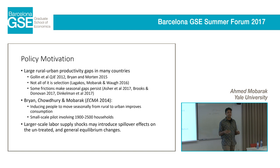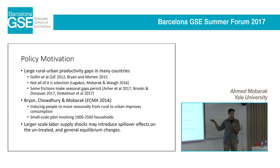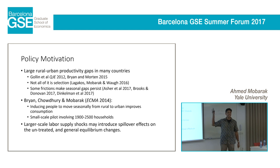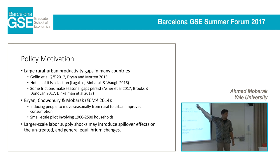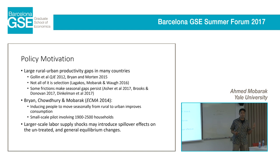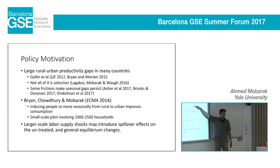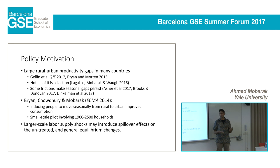Now some policy motivation. There are big rural-urban productivity gaps that macroeconomists have pointed out across the world. A paper by David Lagakos, Doug Gaul, and Mike Waugh points out there's about a 300% gap in rural versus urban productivity. Wages are about three and a half times higher in urban areas, and in developing countries they seem to be about five times higher. So the puzzle is: why are people not moving to take advantage of those higher wages and staying back in unproductive rural areas?